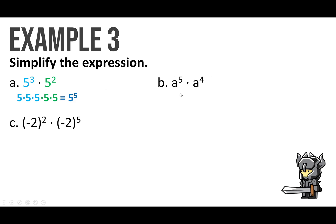For letter B, you have a to the 5th power — that's a times a times a times a times a — and then a to the 4th power, a times a times a times a. All together we have a to the 9th power. The shortcut: if the bases are the same and you're multiplying, just add the exponents — 5 plus 4 gives you 9. Please don't make the mistake of multiplying 5 times 4, giving you a to the 20th. I get students who do that every year and get it wrong on the test. It's adding.